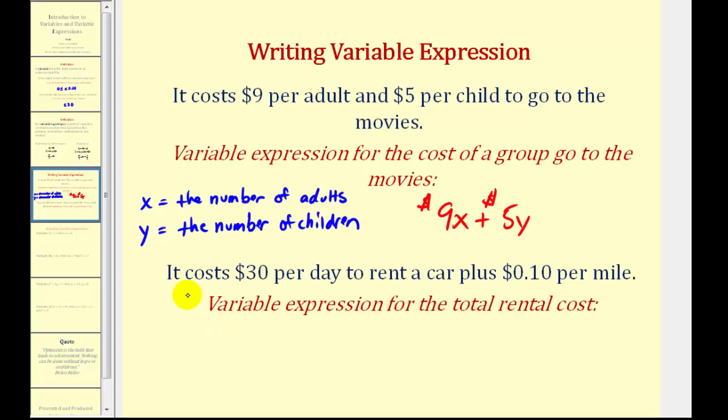Another example might be if you need to rent a car, and it costs $30 per day to rent the car, plus $0.10 per mile. If we want to write a variable expression for the total rental cost, again, we have two unknowns in this situation. We don't know how many days the car will be rented, and we don't know how many miles the car will be driven.